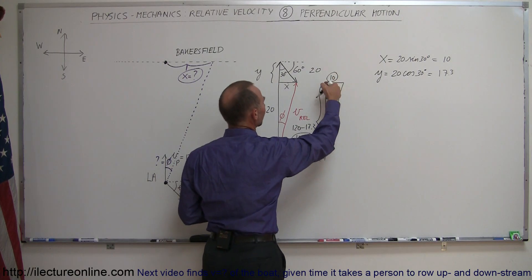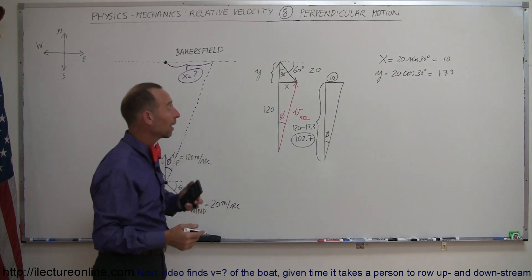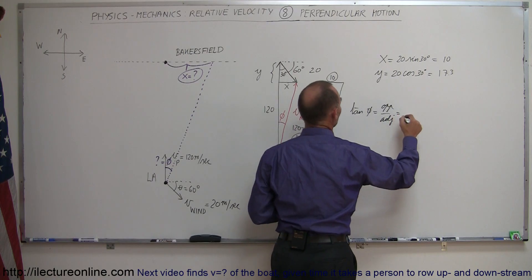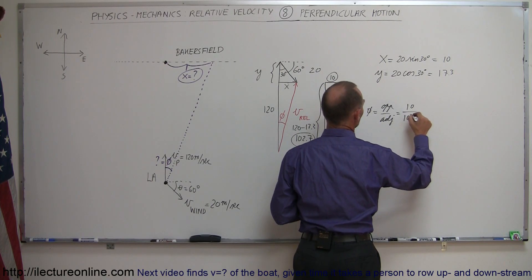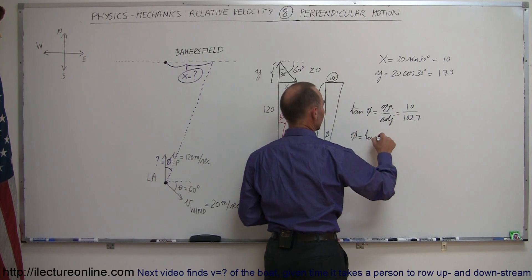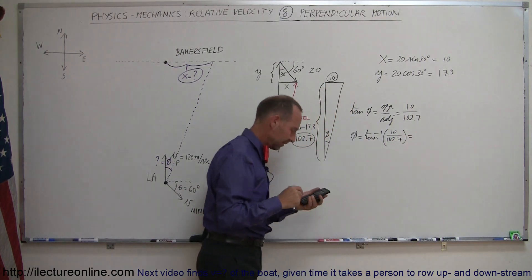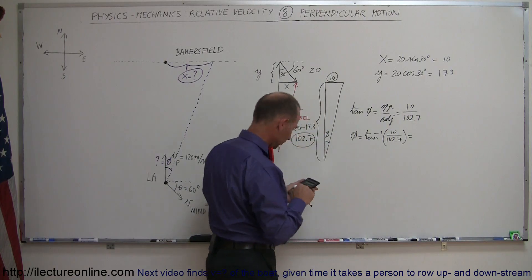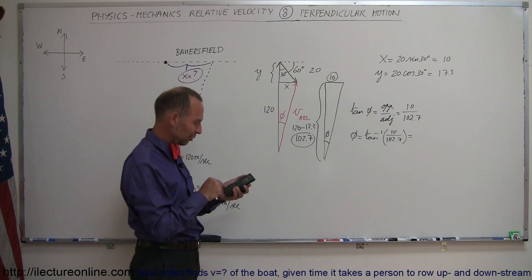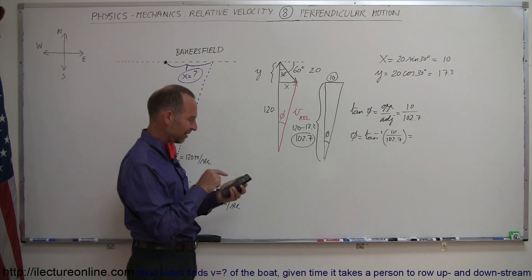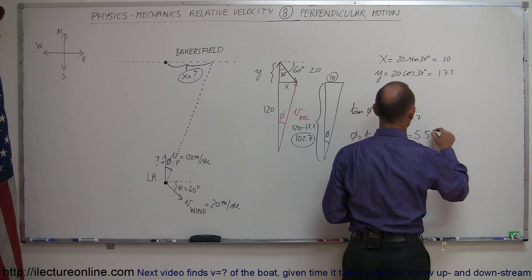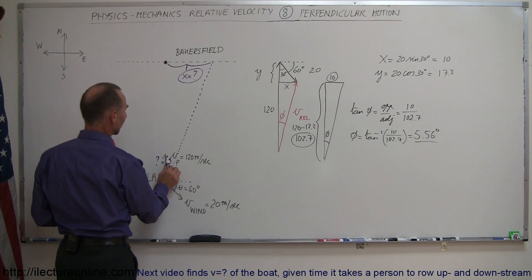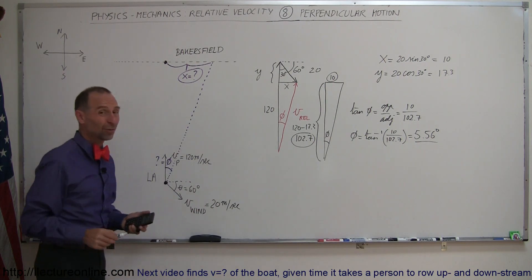Now, using the arctangent, we can find angle phi. The tangent of phi equals the opposite side over the adjacent side: 10 over 102.7. Therefore phi equals the arctangent of 10 divided by 102.7. Taking the arctangent of that gives us 5.56 degrees. So the plane will veer off unknowingly at an angle of 5.56 degrees east of north.